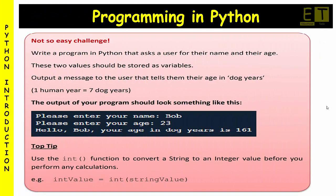For the harder challenge, write a program in Python that asks the user for their name and age, storing both as variables. Output a message telling them their age in dog years, where one human year equals seven dog years. The output should say 'please enter your name', 'please enter your age', then 'hello [name], your age in dog years is [value]'. Top tip: use the int() function to convert a string to an integer before performing any calculations. The answers to these challenges will be uploaded in the next video.